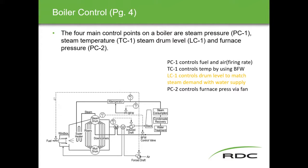All of these components relate to our trade and the control of the boiler. There are a few different ways boilers are controlled, but there are four main control points. PC1 controls the fuel and air firing rate. The pressure is taken off the steam header — depending on demand, there will be higher or lower pressure — and that signal is sent to the forced air fan for combustion air and also to the fuel valve.